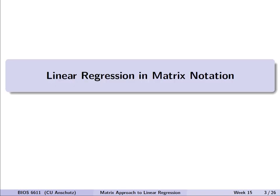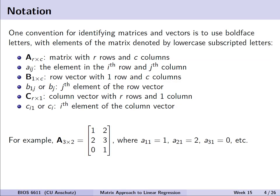Let's jump in to doing linear regression in the format of matrices. Before we do that, let's review some of the notation we need. One of our conventions for identifying matrices and vectors is to use boldface for the letters, and elements of that matrix are denoted by a lowercase letter with subscripts. Our matrix A has R rows and C columns, and we designate a specific element as lowercase A sub ij, in the ith row and jth column.